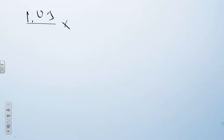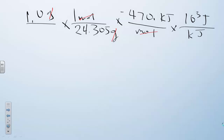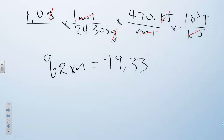For Q_reaction, I have 1 gram of magnesium reacting. I convert that to moles using 24.305 grams per mole, which gives me 1 mole of magnesium releasing 470 kilojoules of heat. I cancel grams and moles, and I also convert from kilojoules to joules so I can add it to Q_water. I find that Q_reaction is equal to 19,337 joules.